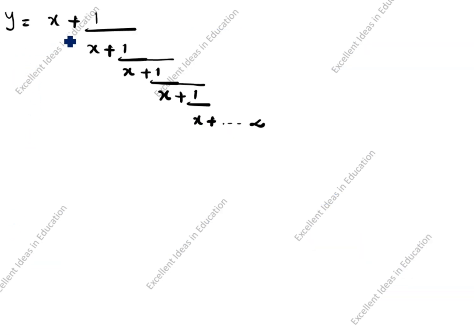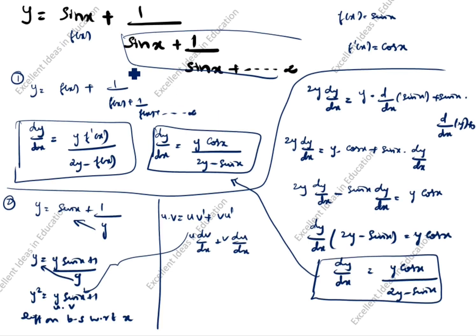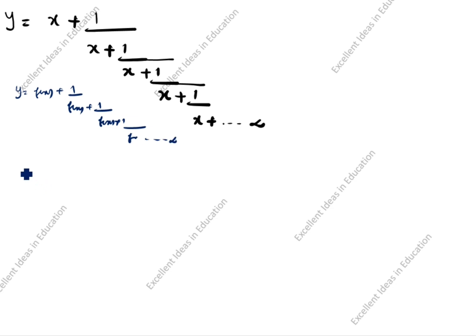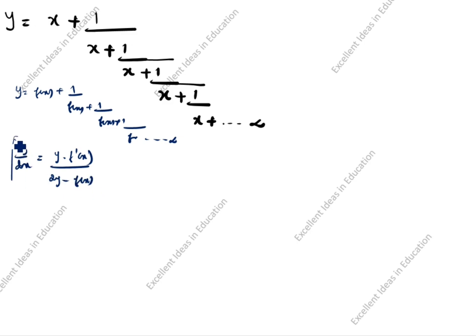y is equal to x + 1/(x + 1/(x + 1/x...)) going on to infinity. This is the same form as the previous: y = f(x) + 1/f(x) + ... The formula is dy/dx = y·f'(x) divided by (2y − f(x)). Here f(x) = x, and f'(x) = 1.